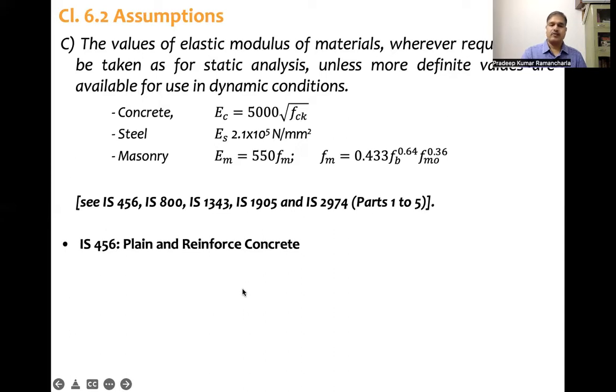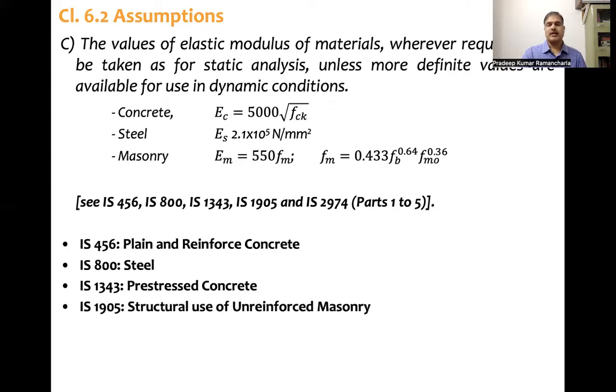And yeah, so 456 plain and reinforced concrete, 800 for steel, 1343 is for pre-stressed concrete and 1905 for structural use of unreinforced masonry and 2975 design and construction of machine foundations. These are the three assumptions which IS 1893 is making for the purpose of usage of the utility of the code.